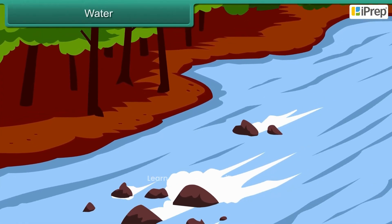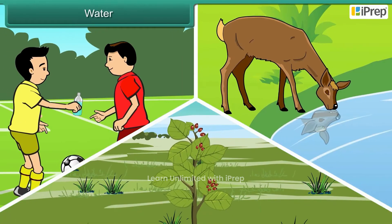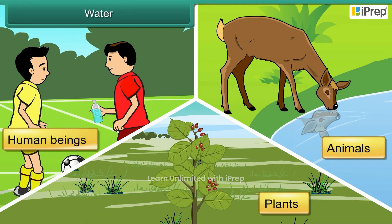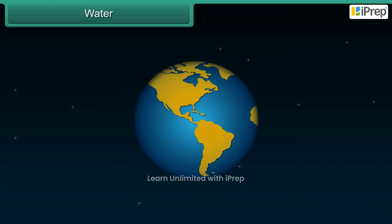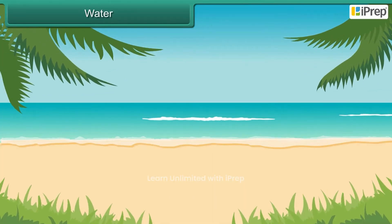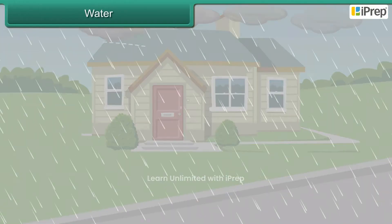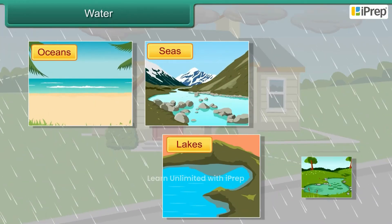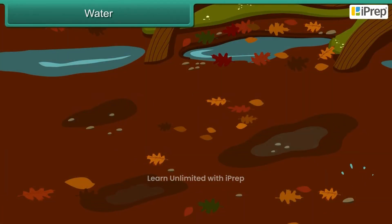Water is essential for the survival of all living things. Plants, animals and human beings need water. The earth is the only planet where water exists. Water comes from the sky as rain and fills up oceans, seas, lakes and ponds. It is also found deep under the ground.